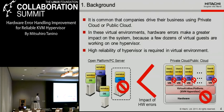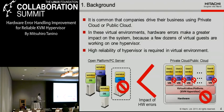As you know, it is common that companies drive their business using private cloud or public cloud. In these virtual environments, hardware errors make a greater impact on the system because a few dozen virtual guests are working on one hardware. In the previous environment, there were many servers and each server had individual services. So if one server goes down, other servers can keep their operation. However, currently services and virtual machines are working on one hardware and one hypervisor. So if a hardware error occurs, all guests are affected. The impact of hardware error is much bigger recently.